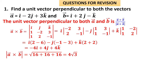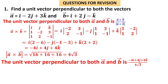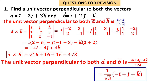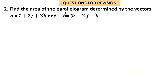The magnitude of −4i + 4j + 4k is √(16 + 16 + 16) = 4√3. Dividing the vector by its magnitude: (−4i + 4j + 4k) / (4√3) = (1/√3)(−i + j + k). So the unit vector perpendicular to both a and b is (1/√3)(−i + j + k). If a vector of magnitude 5 perpendicular to both is needed, simply multiply this unit vector by 5.